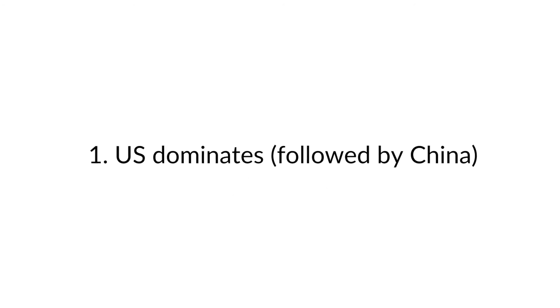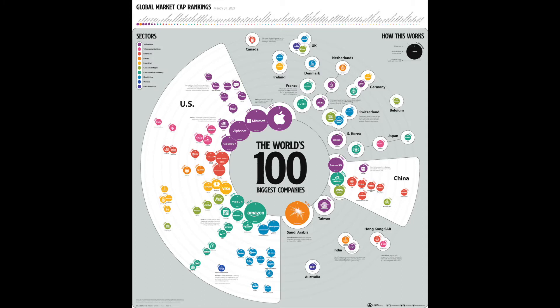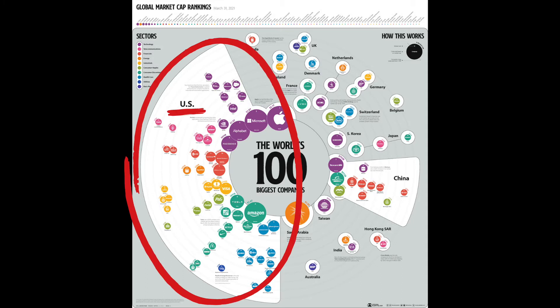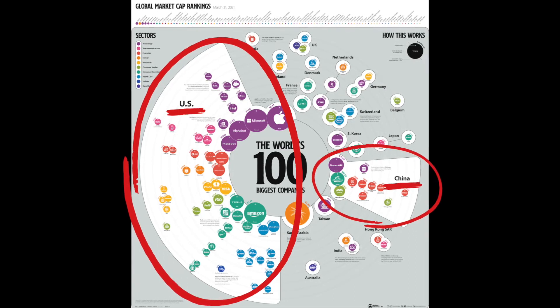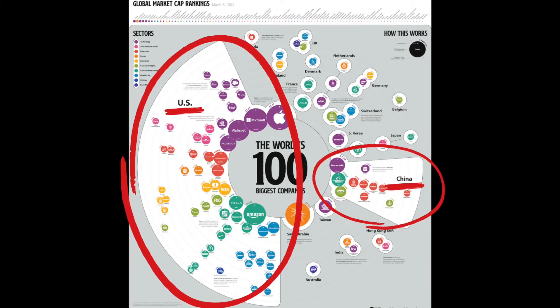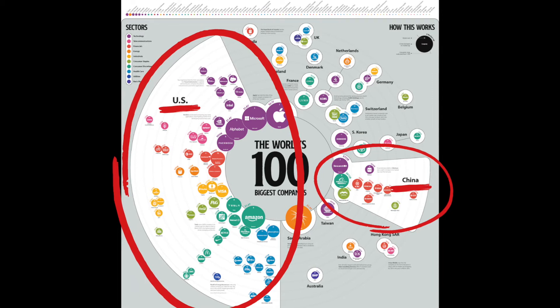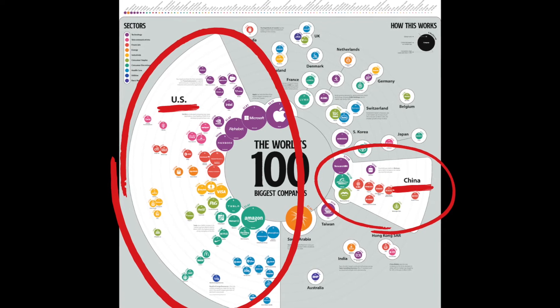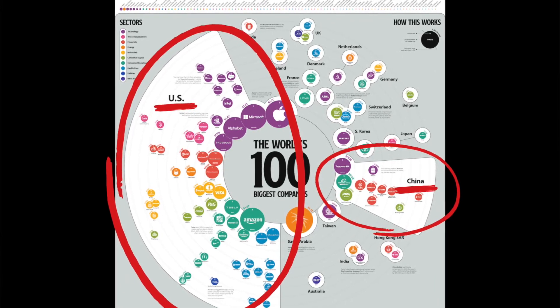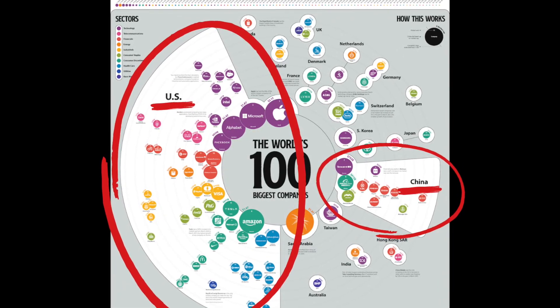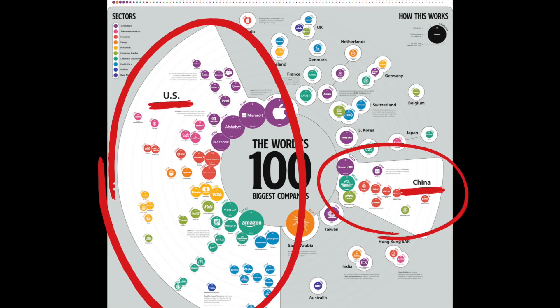The first is how much the US dominates in terms of having the biggest companies in the world, which also means they have the biggest stock market in the world. Look at China — although they are much smaller in comparison, they are still clearly second. That relates to my other video, 'Never Invest in China,' where I look at the growth of Chinese stock markets in the last 20 years, so check that out.